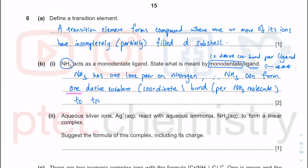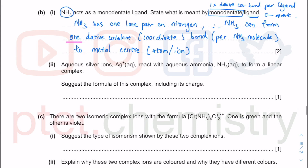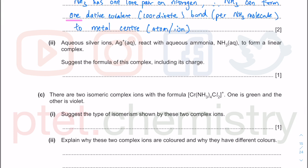The dative covalent bond is formed to the metal center, which could be a metal ion or metal atom. The key point is you only form one dative covalent bond per ligand molecule. The lone pair on nitrogen — one lone pair of electrons — is sufficient to satisfy the monodentate definition.